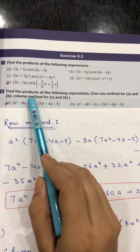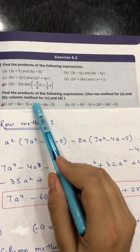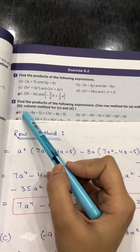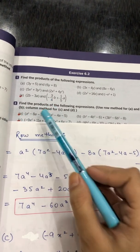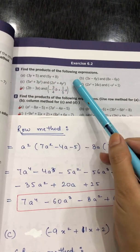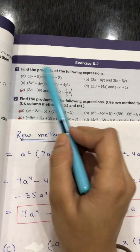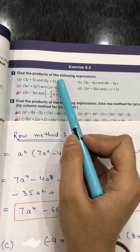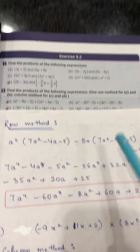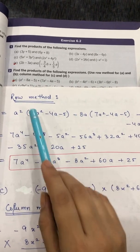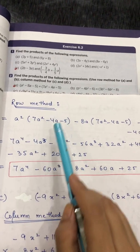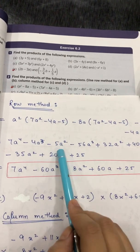Then take −8a and multiply it with the second expression, then take −5 and multiply it with the second expression. Each term of the first expression gets multiplied with the entire second expression — this is the row method. Now multiply a² with the expression: 7 · a² · a² = 7a⁴, then −4 · a² · a = −4a³, then −5a² remains as it is.